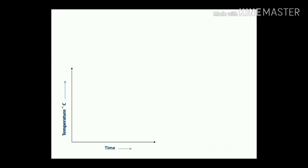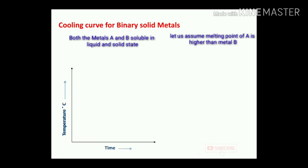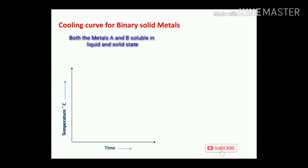Here you can see the x-axis representing time and the y-axis representing temperature — this is the cooling curve for binary solid metals. We are assuming that metal A has a melting point higher than metal B. A and B form a new material or solid solution, called a binary solid metal. Both metals A and B are 100% soluble in both the liquid state and the solid state.